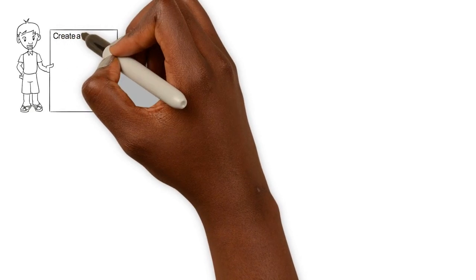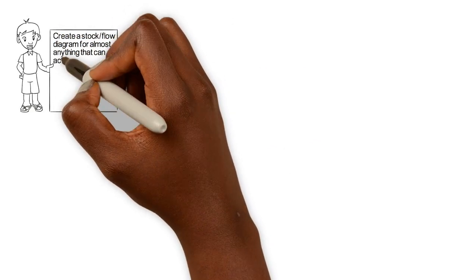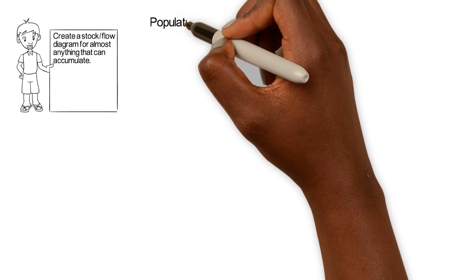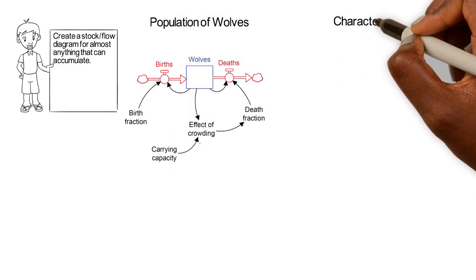Create a stock-flow diagram for almost anything that can accumulate. For example, that population of wolves in a national park or a character's level of happiness.